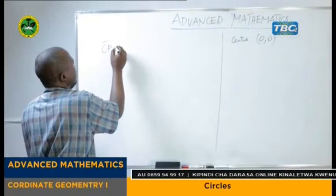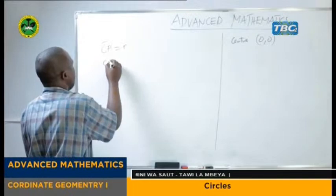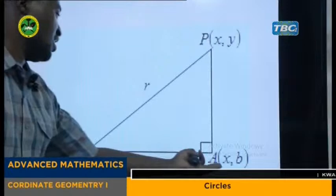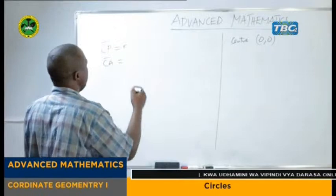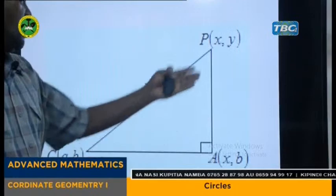CP is equal to R or radius. Again, with the distance CA — that is CA — this is the same as the difference between x-coordinate of C and A. So that is x_C minus A, the same as x_C minus A. And again the length PA, that would be y minus B.